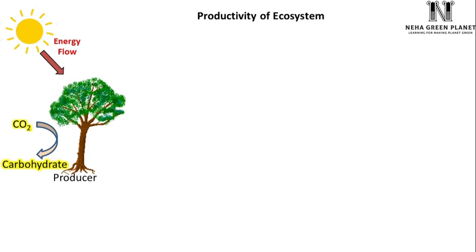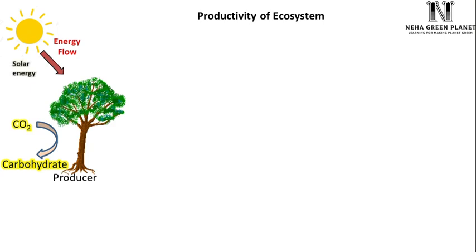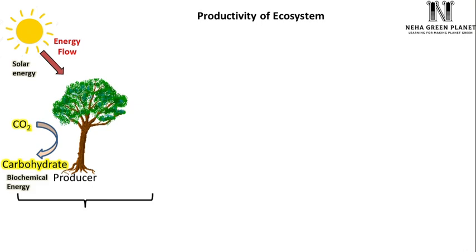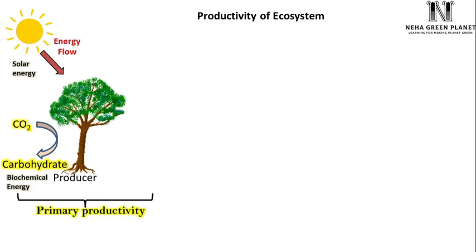The first law of thermodynamics is applicable in ecosystem — energy is neither created nor destroyed; it is simply converted from one form into another. That means solar energy is converted into biochemical energy, that is, carbohydrates in the body of plants. This stored organic matter is known as primary productivity. Primary productivity is the rate at which radiant energy gets converted into organic matter by producers.